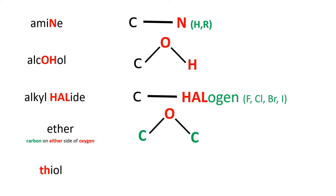Lastly is thiol. Thiol is a little bit trickier, but you can still memorize it. Thiol is a carbon that's attached to a sulfur and hydrogen — SH. I bolded the letters T and H because when people speak with a lisp, the TH sounds like SH, and that's it.